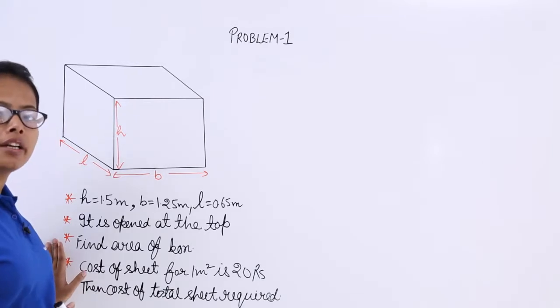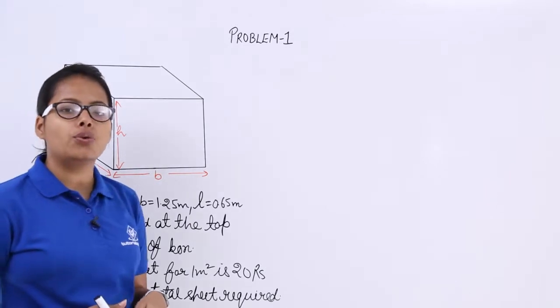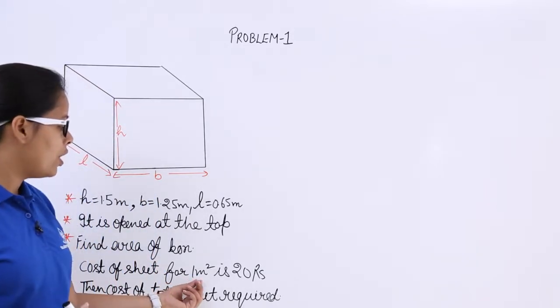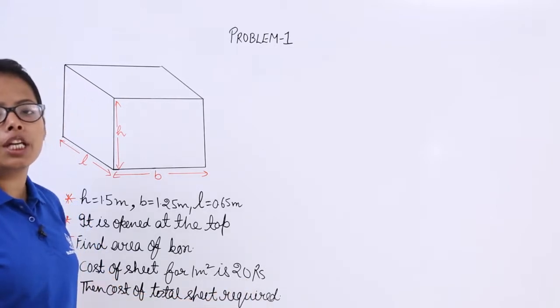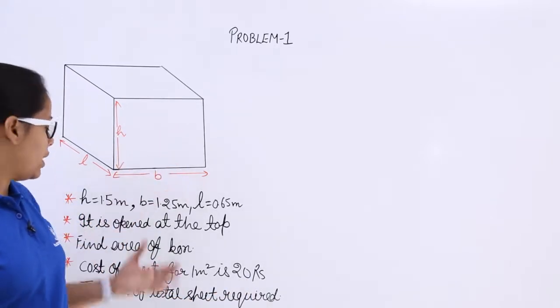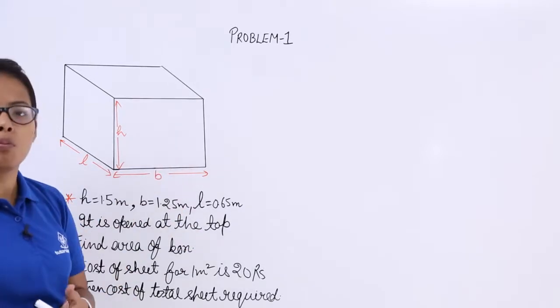What you need to calculate? Find area of this box and it has been given to you that cost of the sheet for area 1 meter square is equal to 20 rupees. You need to calculate the cost of total sheet which is required to make this box.